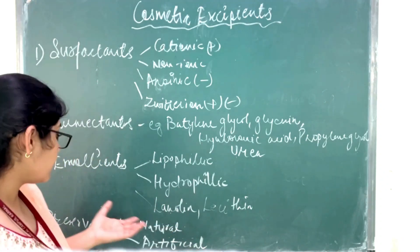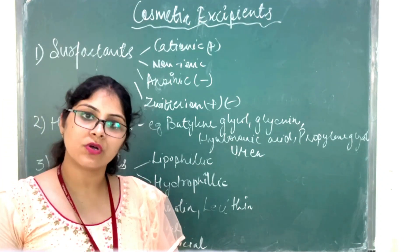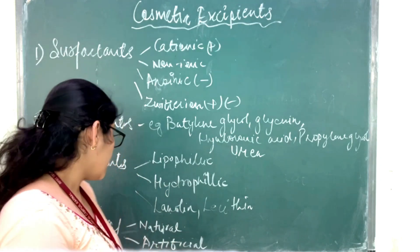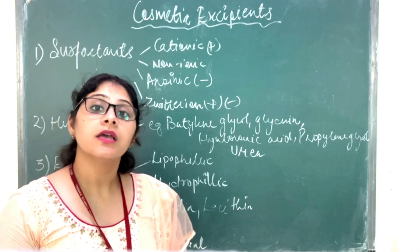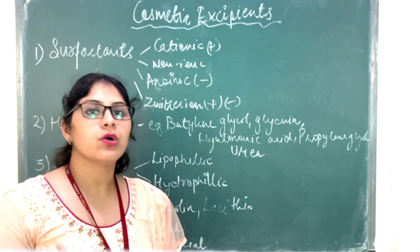We classify the preservatives on the basis of use also and source also. We can use preservatives as antioxidants also. Vitamin E and C are used as preservatives and have antioxidant activity.